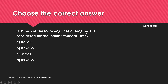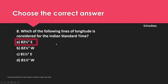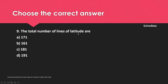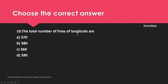Which of the following lines of longitude is considered for Indian Standard Time? The Indian Standard Time is based on the 82 and a half degrees east line of longitude.